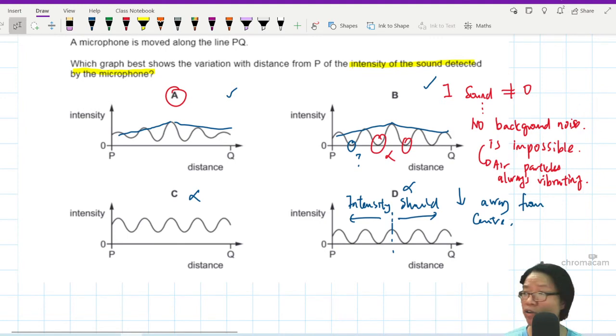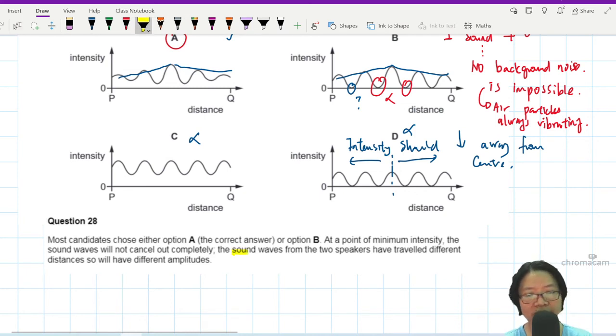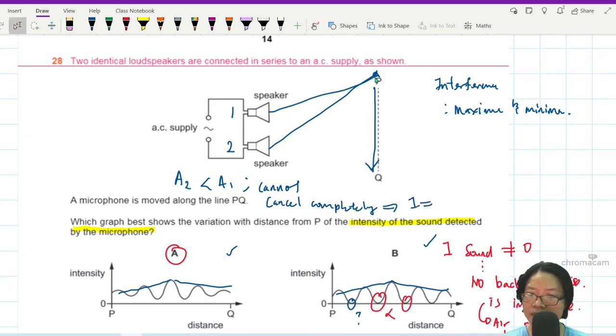So another reason why your intensity of sound cannot be zero. I'm going to crop in the explanation from the examiner report. Another reason they suggested is that the sound wave from two speakers will travel different distances. So because of this, it will not cancel out completely. As mentioned just now, let's say this is speaker one and this is speaker two. When you reach this point here, the amplitude of speaker one is less than the amplitude of speaker two, because the sound wave from speaker one travels further. So cannot cancel completely.